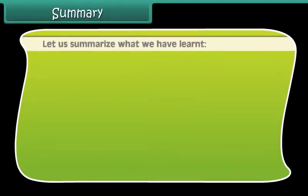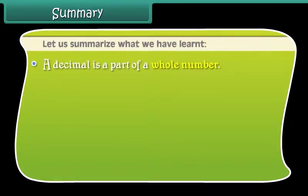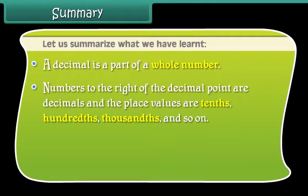Summary. Let us summarize what we have learned. A decimal is a part of a whole number. Numbers to the right of the decimal point are decimals and the place values are tenths, hundredths, thousandths and so on.